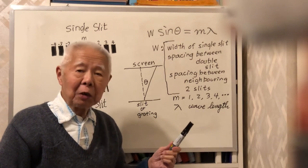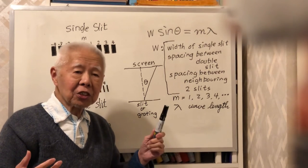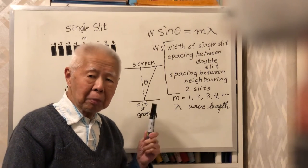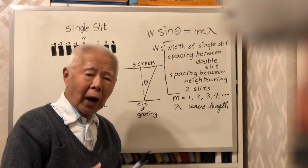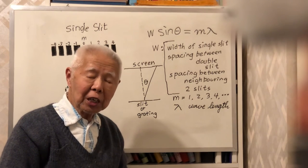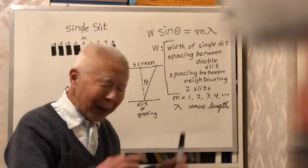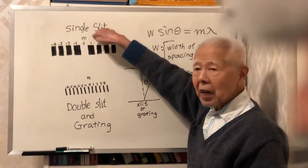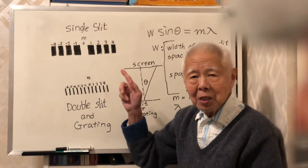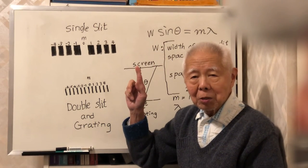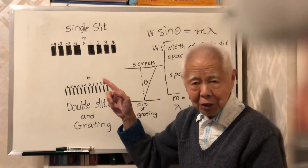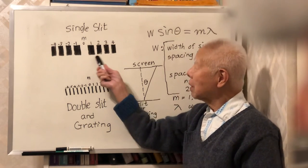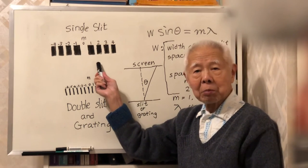Lambda is of course very obvious — it is the wavelength of the light. What is M? M can be 1, 2, 3, and so on. In the single slit pattern, M equals 1 means the first dark fringe, M equals 2 means the second dark fringe. I indicated M = 1, 2, 3, 4 on the diagram.